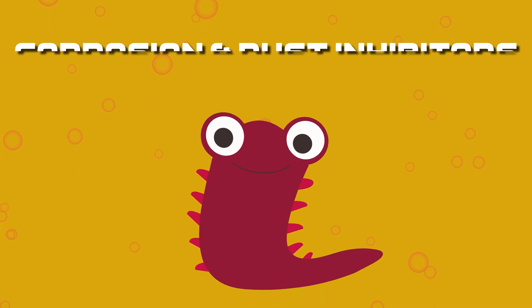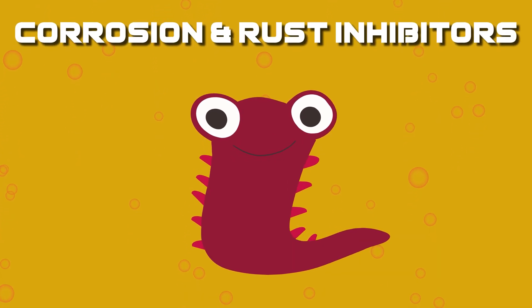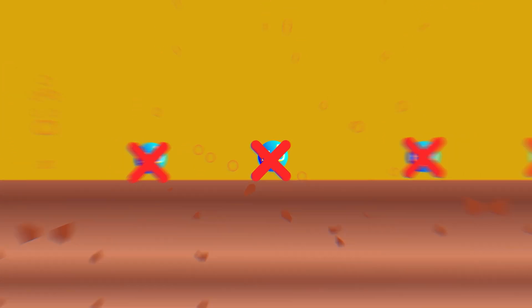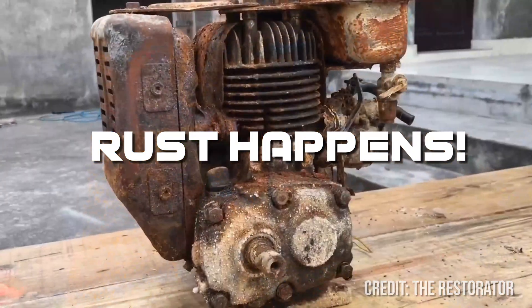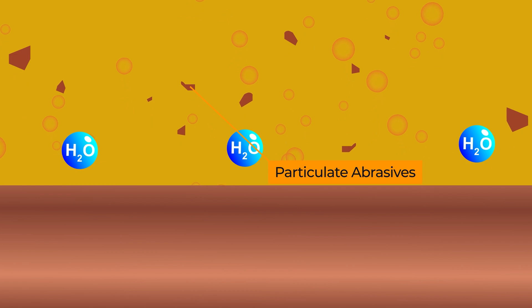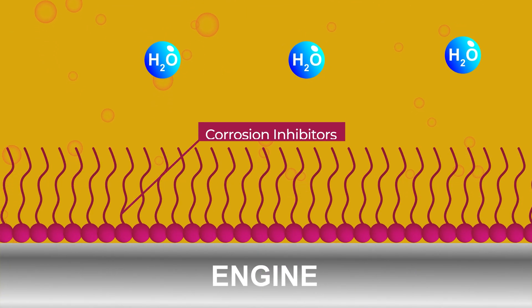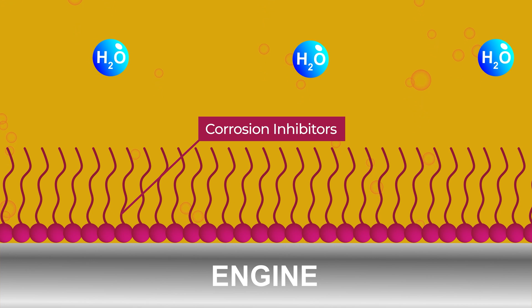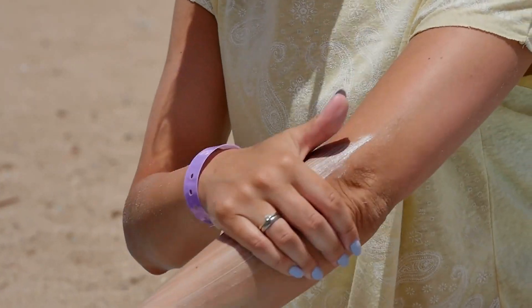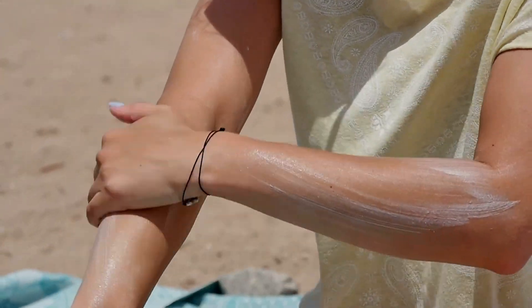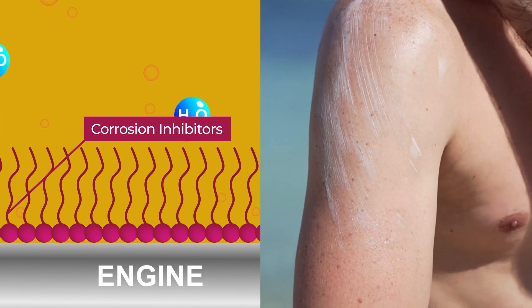Similarly, there are corrosion and rust inhibitors. Very few systems can completely exclude water, and since water is a necessary ingredient for the oxidative corrosion of metals, rust happens. Rust degrades metal itself and generates particulate abrasives that can wind up causing wear. Through the use of corrosion inhibitors, polar molecules selectively cling to metal surfaces to form a barrier that excludes water. Think of it this way in simplified terms — these additives act like sunscreen blocking out UV rays from burning your skin. Except in this situation, the UV rays are water and your skin is metal in an engine.